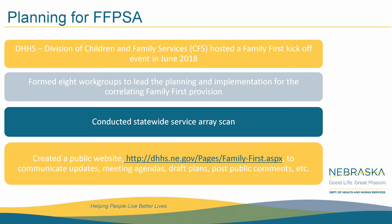As stated, eight work groups were formed and more information can be found on our link. The biggest provision was the prevention services and program plan, which we dove into drafting immediately. The first step was to review various data points to describe the children, youth, and families, and to understand what impacts removal and what could have prevented it. This led to a comprehensive statewide service array scan. Another provision noted is the kinship navigator program as part of our primary prevention services. Having these work groups and the website has helped the department provide transparent communication and keep people engaged about FFPSA.